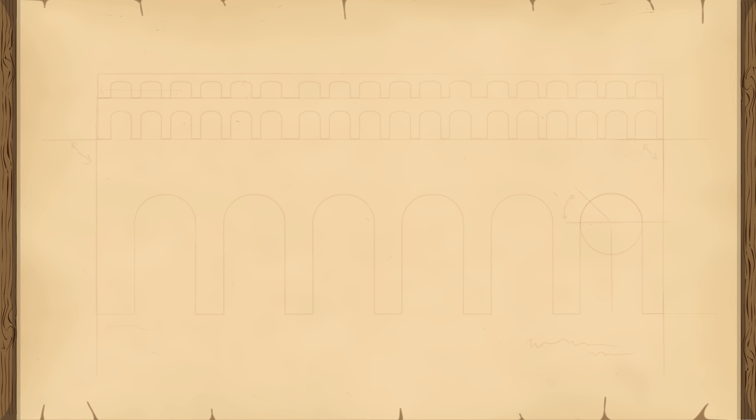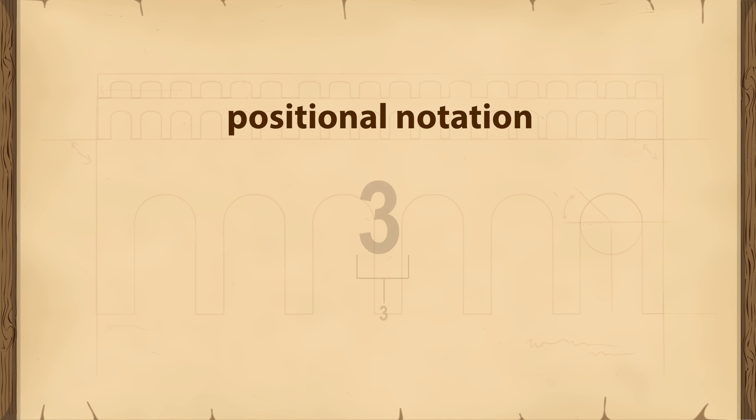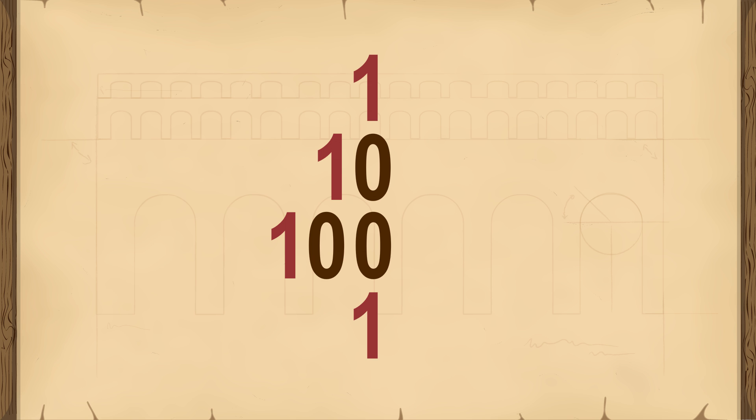Our modern number system is an example of positional notation. In positional notation, the same symbol represents different quantities depending on its position in the number. For example, the symbol 1 can represent 1, 10, 100, 1000, and so on. Consequently, the numbers 10, 100, and 1000 require zeros as column placeholders following the 1.